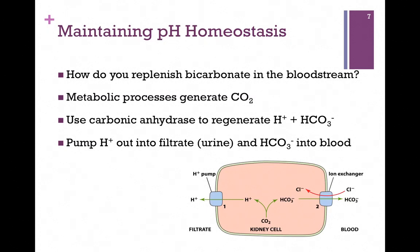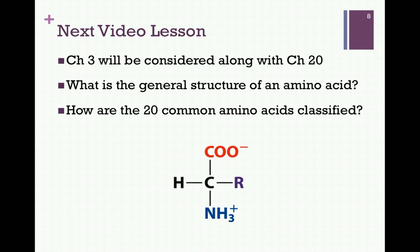This is one of the most important buffering systems in the human body. There are others that operate inside the cell — phosphate is one, which we'll discuss in class. This concludes our studies in Chapter 2. We're going to skip Chapter 3 and return to it along with Chapter 20 towards the end of the semester. Our next video lesson will pick up with Chapter 4, covering the general structure of an amino acid as well as classifications for the 20 common amino acids.